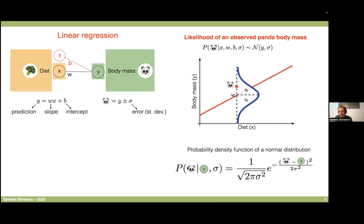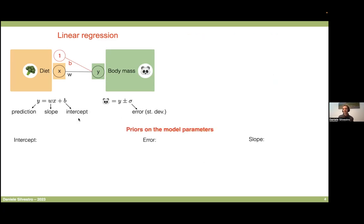The probability of observing the body mass that we do observe, given our prediction and sigma, is given by this formula. If we fit this in a Bayesian framework, we will be looking for the slope, intercept, and error. In a maximum likelihood framework, these will maximize the likelihood of observing this panda body mass. In a Bayesian framework, we are going to have to set up priors on each of the free parameters — the slope, the intercept, and the error.